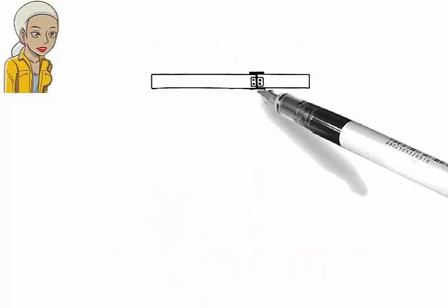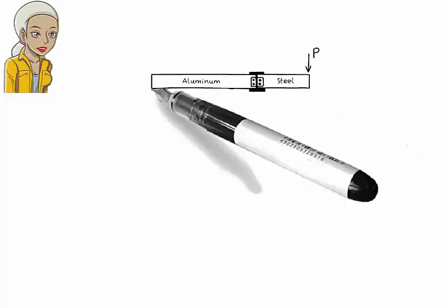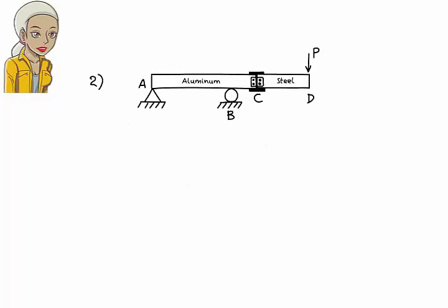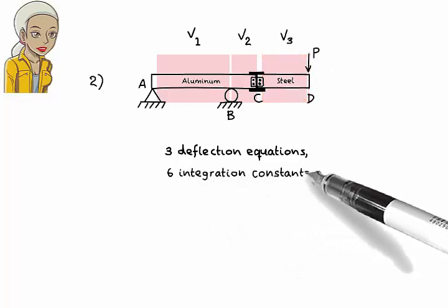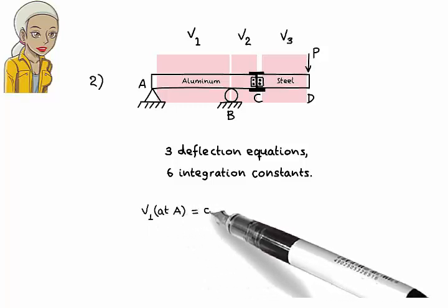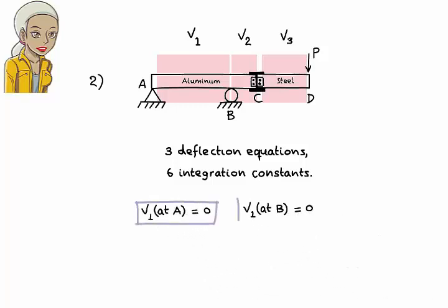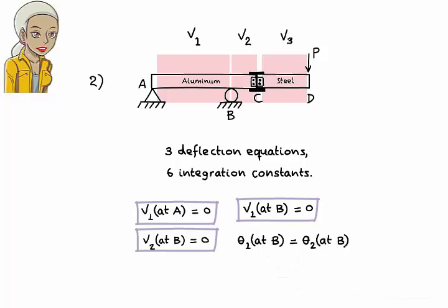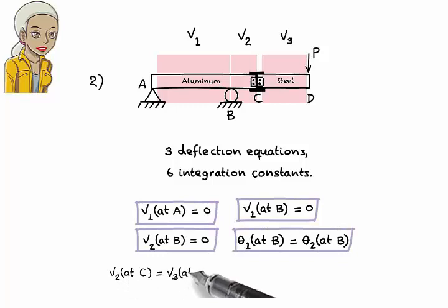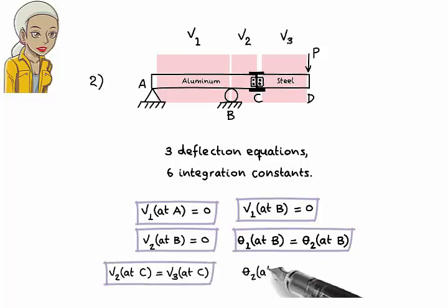Solution for Problem 2. We need 3 deflection equations for this beam. Since each equation has 2 integration constants, we need a total of 6 boundary equations. Deflection at the pin support must be 0. Deflection at B where the beam rests on an internal roller must be continuous and 0 — meaning both V1 and V2 evaluated at point B must yield 0. Slope at B must also be continuous. Deflection at C where the aluminum and steel segments meet must be continuous, and slope at C must also be continuous.